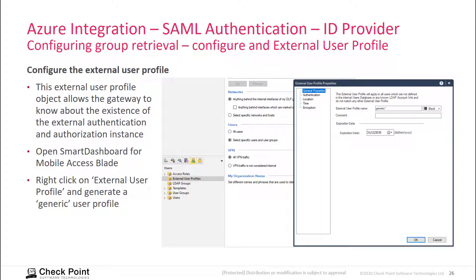In order to use groups that are not internal to the Check Point system, you need to define an external user profile. Open Smart Dashboard, go to the Mobile Access blade, then navigate to Users > External User Profile and right-click. Select the option for a generic user profile — the field is automatically populated — click OK, and you will have your external user profile. Then close Smart Dashboard.